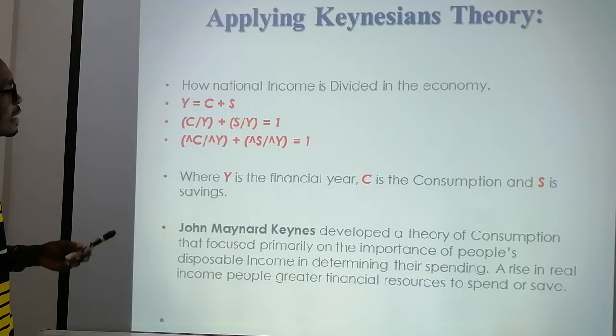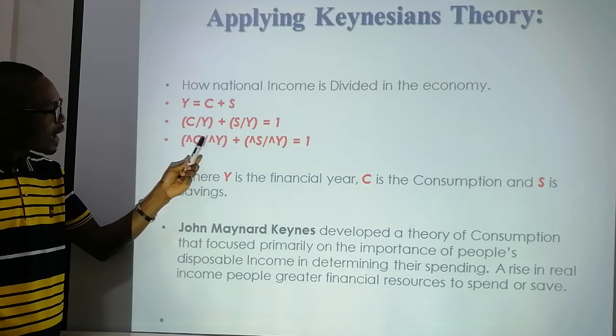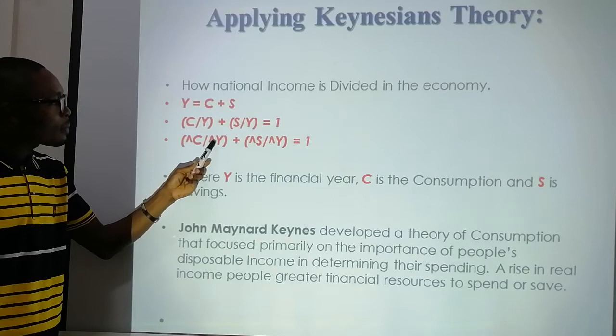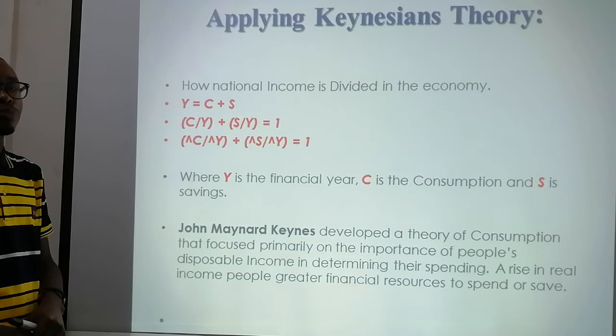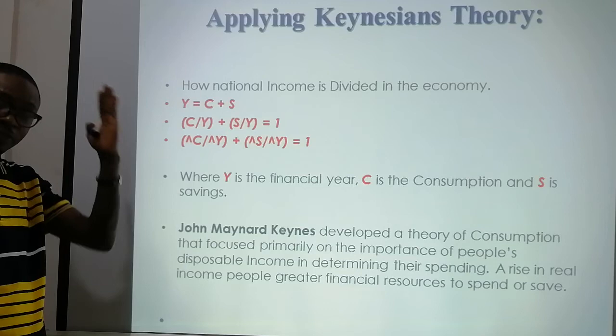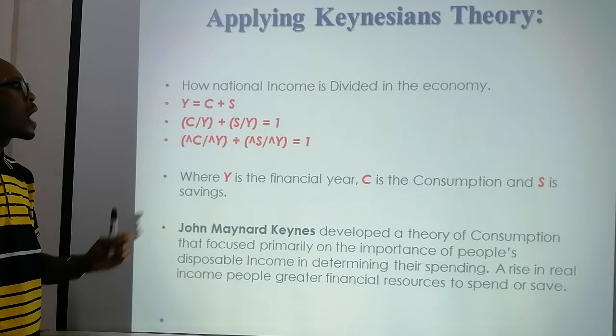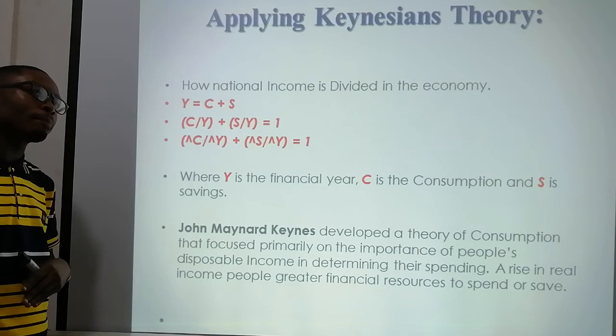Where Y is the financial year, C is consumption, and S is savings. The financial year tells you your income in the financial year. This formula of national income was designed and brought up by Professor John Maynard Keynes. He developed many theories on consumption, savings, and investment.